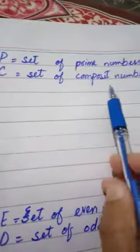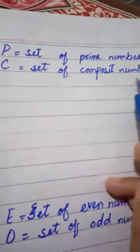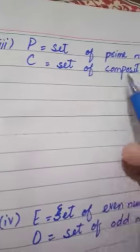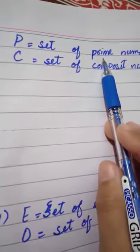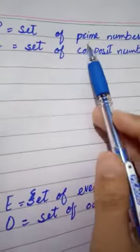P is equal to set of prime numbers, and C is equal to set of composite numbers. Which set of prime numbers were set? It was the set in which there are just 2 factors. So let's write this as it is.